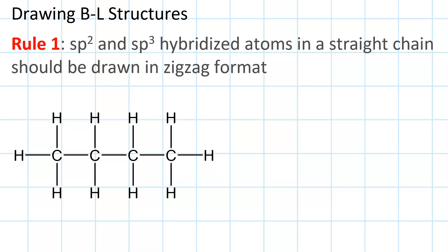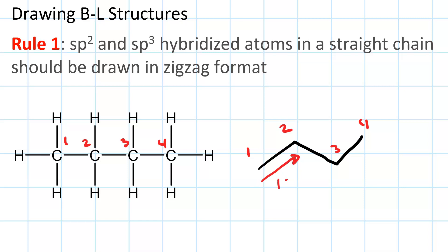Count the carbon atoms: one, two, three, four. That means we need a zigzag with four points — one, two, three, four. This is actually three strokes of the pen: the first stroke is one and two, the second stroke is three, and the third stroke is four. So just remember that.